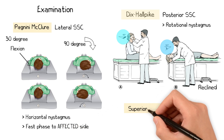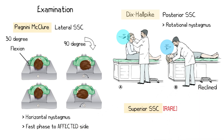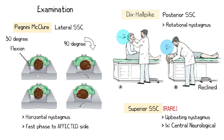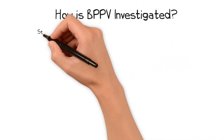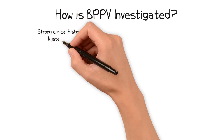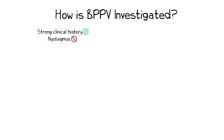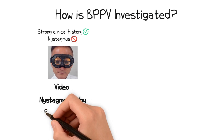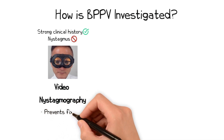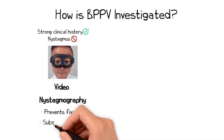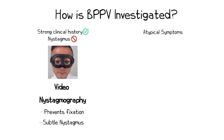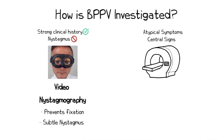Superior semicircular canal BPPV is extremely rare, and so instances of up-beating nystagmus should be investigated for a central neurological cause. If there is a strong clinical history of BPPV but you are unable to elicit nystagmus on clinical tests, then consider formal vestibular testing with video nystagmography. This involves fitting the patient with Frenzel glasses, which magnify the eyes and obscure the patient's ability to fix their gaze; combined with video recordings of the eyes during movement, this can unmask subtle nystagmus. In patients who have atypical symptoms or central signs, consider an MRI scan.